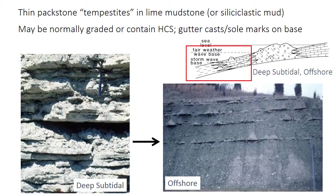As mentioned in the last video, the rate of carbonate sediment production decreases as water depth increases. So in these deeper water environments below storm wave base, the mud may have a lot of clastic — also called terrigenous — clay in it, just because carbonate production rates are very low.